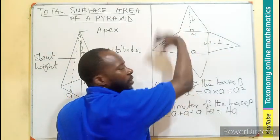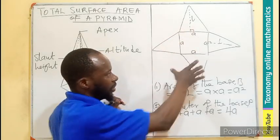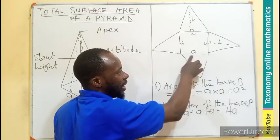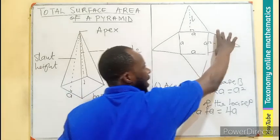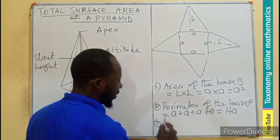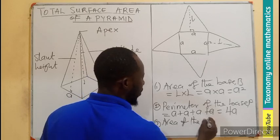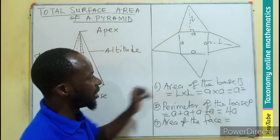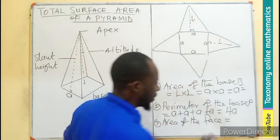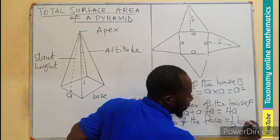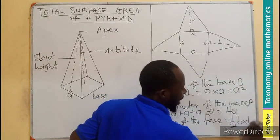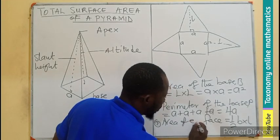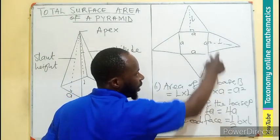Now let's find the area of the faces. There are four triangular faces, all formed from the same base 'a', meaning they are all the same. So we find the area of one face: area of one face = ½ × base × height = ½ × a × L, where L is the slant height.